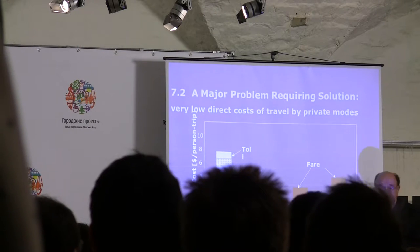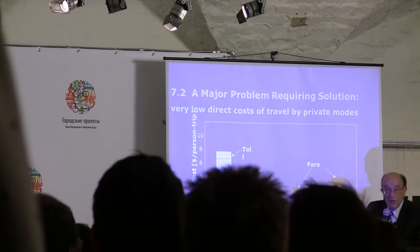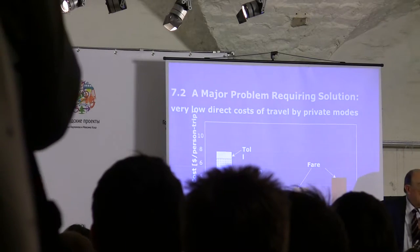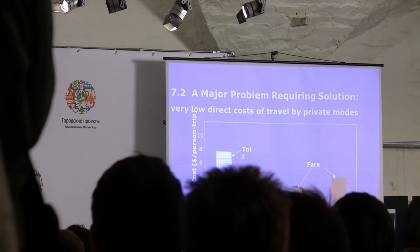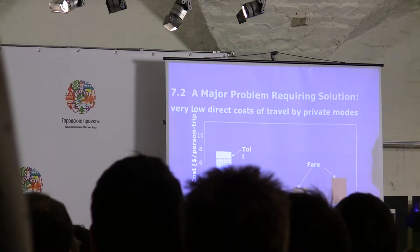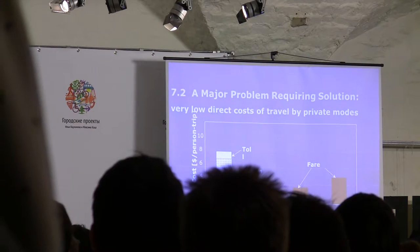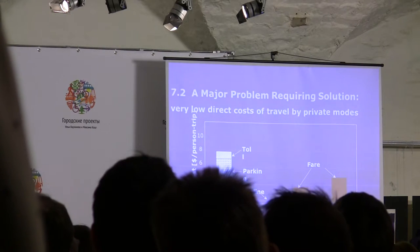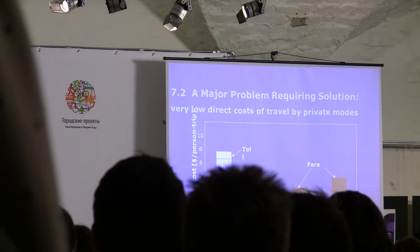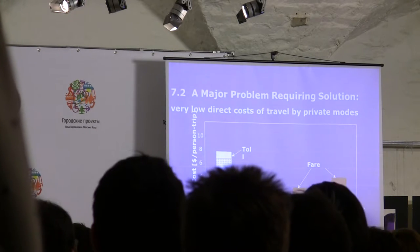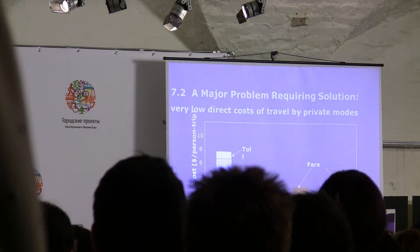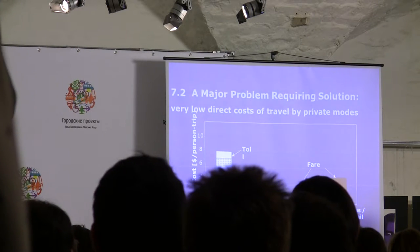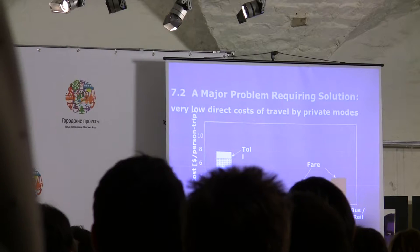Sometimes it is cheaper to drive than to use public transport. But in some cases, suburbs don't have pedestrian transport. The car is the most convenient and the cheapest, no doubt. But if you have 50,000 people coming from one corridor into the central city, it's many times more expensive if they all drive.